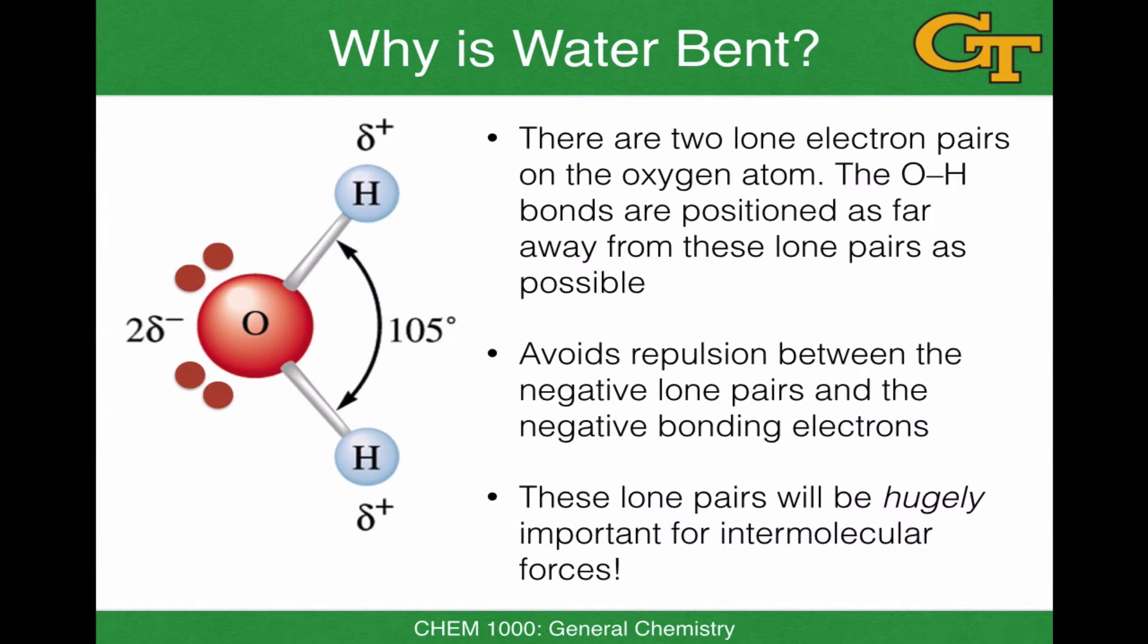There are two lone pairs attached to the oxygen atom in water. And the OH bonds are positioned as far away from these lone pairs as possible. This explains the rather perplexing bond angle of 105 degrees in water. The expected bond angle, if we imagine the entire electronic arrangement as tetrahedral, is 109.5. But the smaller angle, the smaller HOH angle than 109.5, is typically rationalized by appealing to a repulsive effect of these lone pairs.